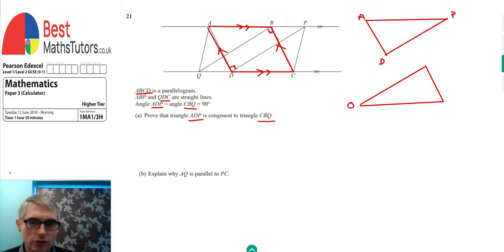There we go. So QBC. And then I'm going to write on the information that we know about these. So we do know that ADP is parallel to BC. So we can see it on the main diagram there. We also have been given ADP, the angle at D is 90 degrees and the angle at B is 90 degrees.